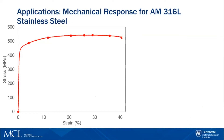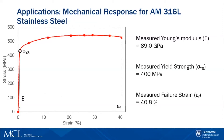Some different applications of mechanical characterization include this example shown here for an additive manufactured 316L stainless steel material. This sample was tension tested, meaning that it was pulled until it failed. Shown here is our stress-strain curve with strain on the x-axis and stress on the y-axis. From this curve, you can calculate specific material parameters like your Young's modulus, your yield strength, and your measured failure strain, as shown here on this plot.